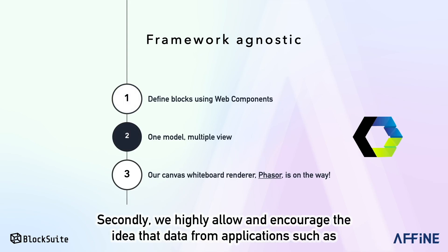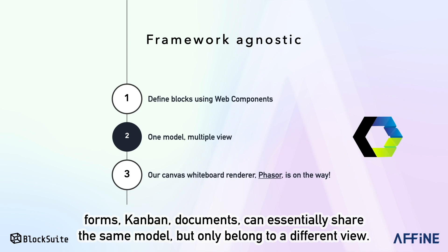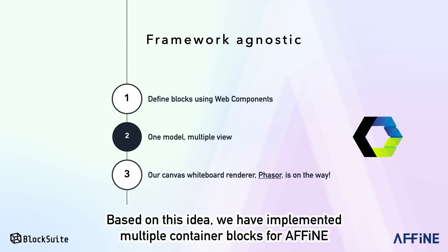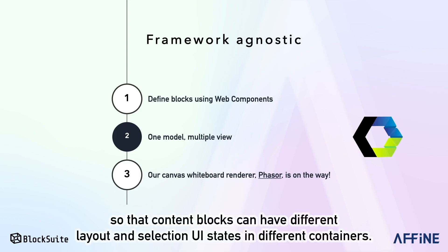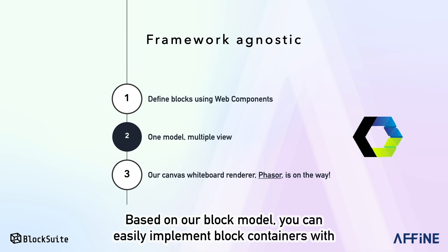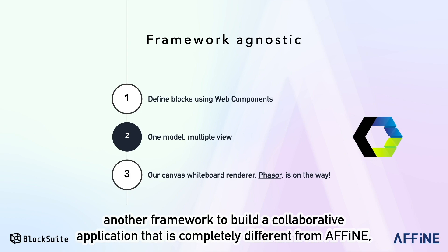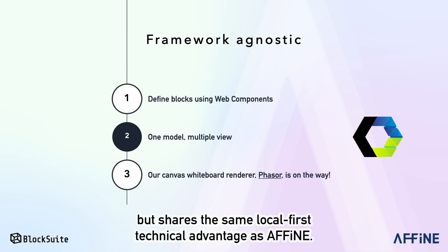Secondly, we highly allow and encourage the idea that data from applications such as forms, Kanban, and documents can essentially share the same model but only belong to a different view. Based on this idea, we have implemented multiple container blocks for AFFiNE, so that content blocks can have different layout and selection UI states in different containers. Based on our block model, you can easily implement block containers with another framework to build a collaborative application that is completely different from AFFiNE, but shares the same local-first technical advantage.